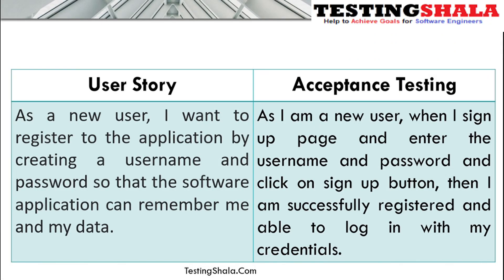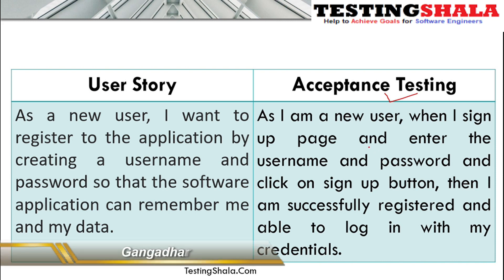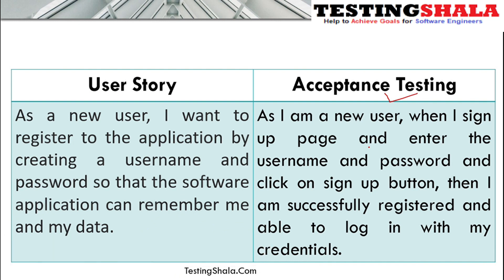Now we'll understand how to convert these user stories into acceptance criteria. As a new user, when I go to the sign-in page and enter the username and password and click the sign-up button, I should be successfully registered. After registration, I should be able to use the same credentials — the same username and password — to log into the application.